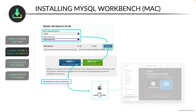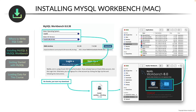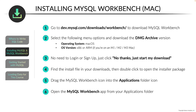Once you double click on the DMG file, a window will open. Drag the MySQL Workbench icon on top of the Applications icon. Then if you open your Finder window within Applications, you should now see MySQL Workbench. Double click on it to open MySQL Workbench. You can pause here and go through these steps on your own, or watch the demo.